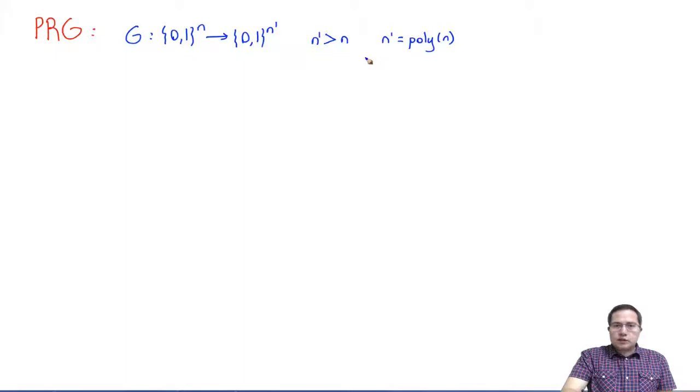Such a G needs to be a polynomial time deterministic function. This is very important. A PRG, a pseudo-random generator, is a deterministic algorithm or function. It's not randomized. It is going to produce something that looks random, but it's going to produce it in a deterministic way.